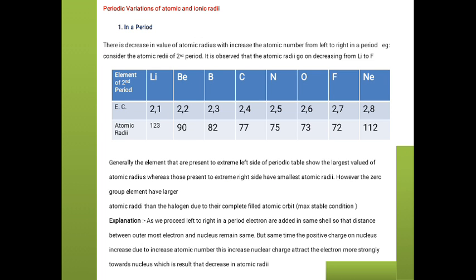So the key point is: the addition of electrons into the same shell means the force of attraction between the nucleus and that outermost electron increases. As the force of attraction between the nucleus and that outermost electron increases, there is a reduction of atomic radii. That is the first reason why atomic radii decrease across periods.